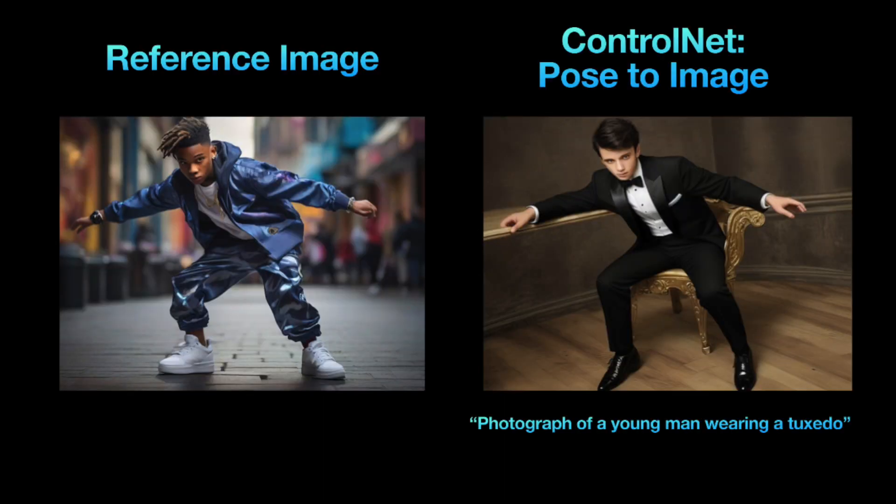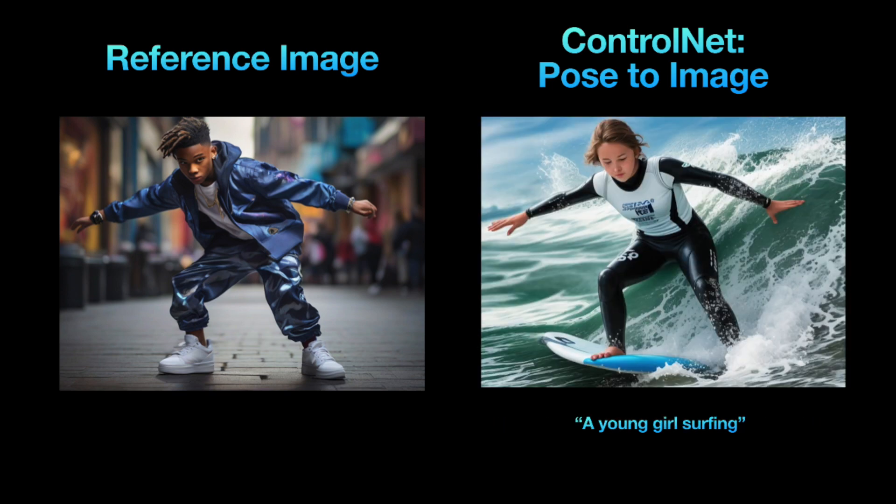Pose to image is a ControlNet feature that recognizes poses in images and uses them to influence image generation. It's handy if you want to change clothes for a character or replace the character while keeping the same pose. Here's an image of a young man in a tuxedo — notice how the image maintains the same pose. And here's another one of a girl standing on a surfboard — once again, the pose stays the same.